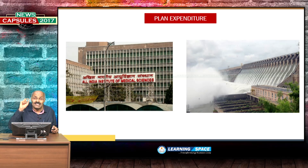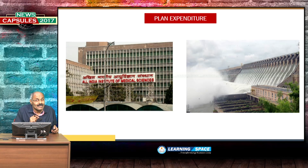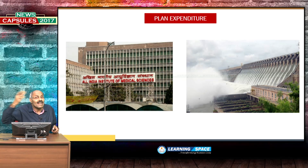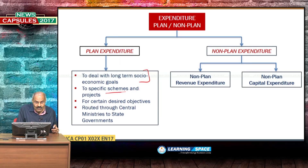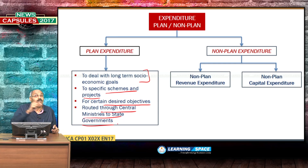To construct a hospital, to construct a dam, to construct a national highway — this expenditure is capital expenditure. If a hospital is constructed, it will serve the generations to come. If a dam is constructed, it will be useful for more than 100 years and future generations will be benefited. Plan expenditure is for specific schemes and projects for certain desired objectives, routed through central ministries to state governments for implementation. Here, assets are created — that is the meaning of plan expenditure.